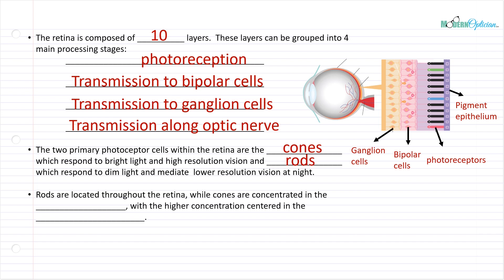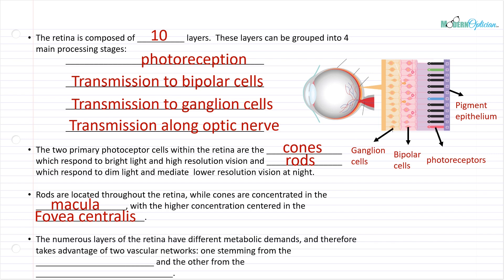The rods are located throughout the retina — and remember, the retina is not just a little spot; it's the entire inner layer of the eyeball. The rods are all over the place, while the cones are concentrated in the macula, which is a very specific spot at the back of the retina. The highest concentration of cones is in the fovea centralis — that is the sweet spot for vision. The numerous layers of the retina have different metabolic demands and take advantage of two vascular networks: one from the retinal network and one from the choroidal network. The choroid is the major blood supply of the eye, but the retina has such a high demand — being the workhorse of vision — that it also has its own vascular network with the retinal artery and retinal vein, while also drawing blood from the choroidal network.